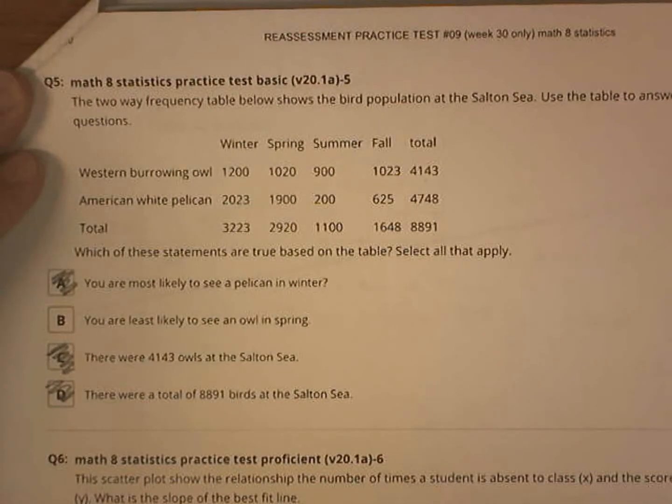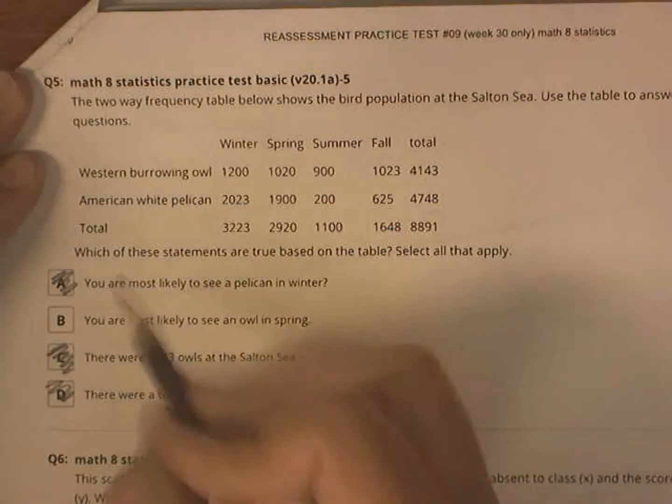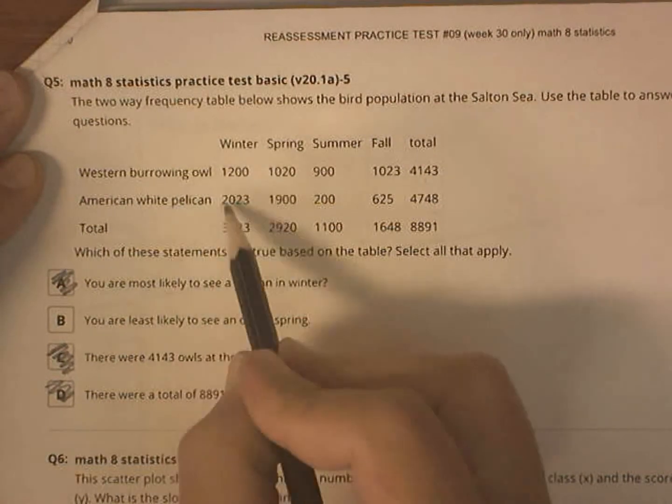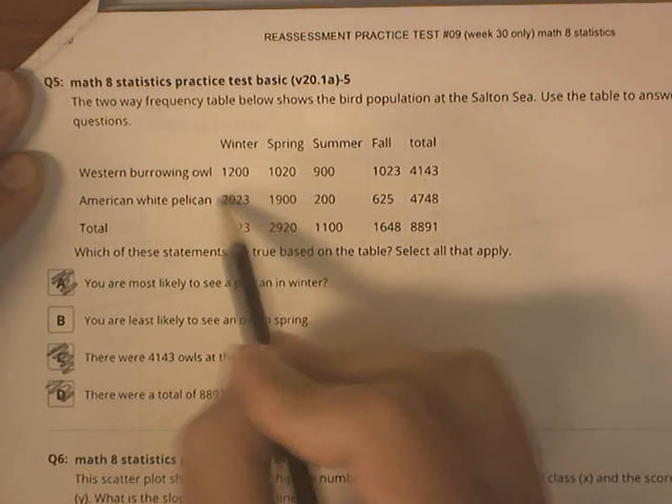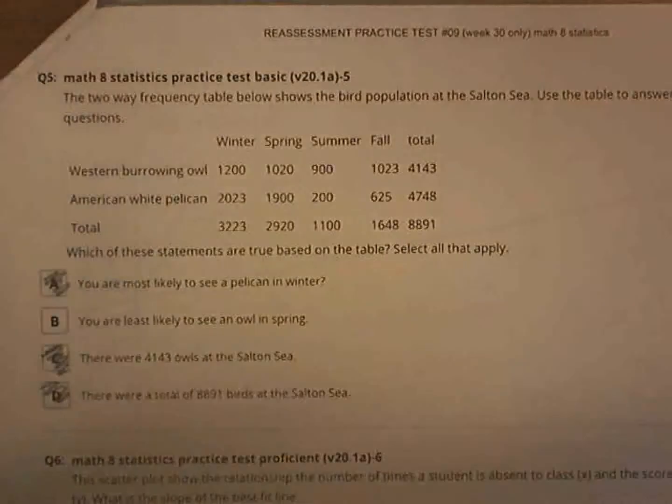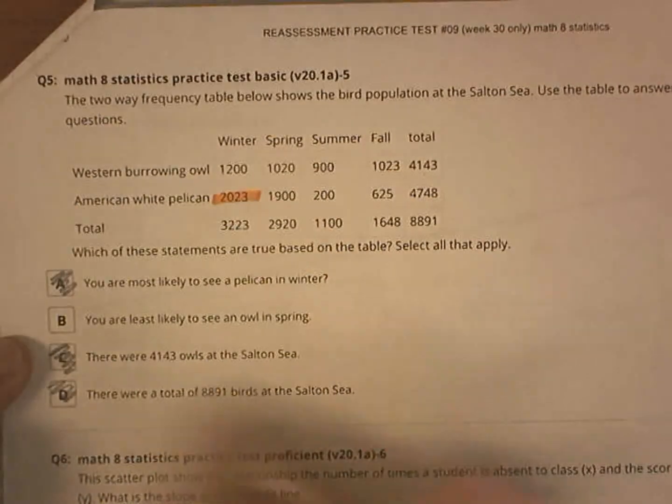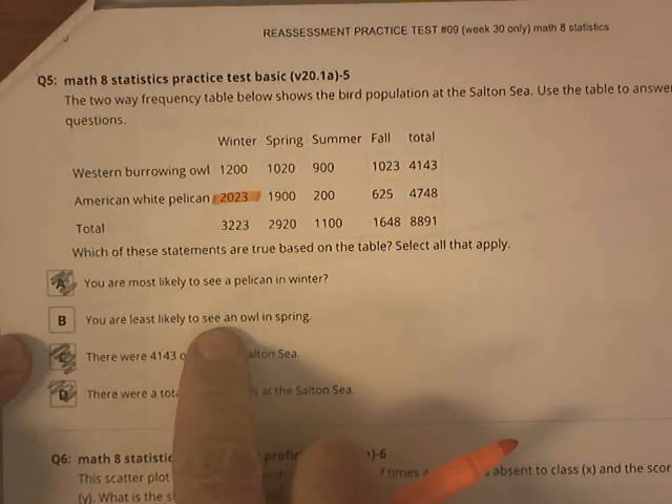Here's a frequency table, and we're going to ask some questions on it. Which ones are true? You are most likely to see a pelican in winter. We'll see pelicans, winter. Yep, lots of pelicans in winter. That answers my first question right there.